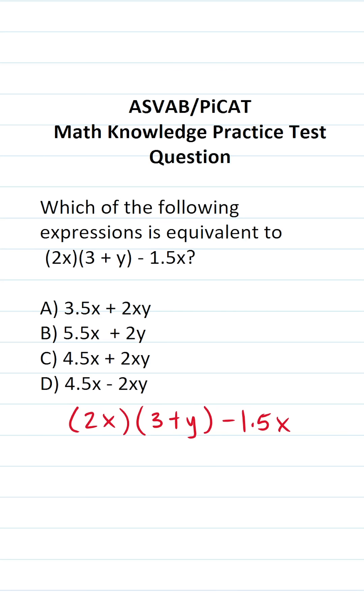In this case, we're going to solve this one by first distributing this 2x here and here. 2x times 3 is going to be 6x. 2x times y becomes 2xy minus 1.5x.